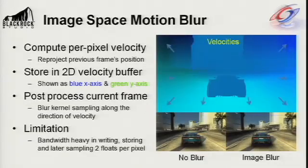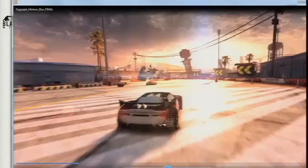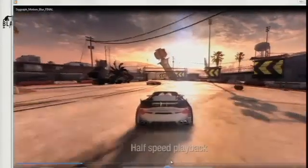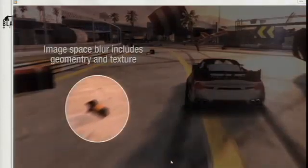Image space motion blur involves computing per-pixel velocity based on reprojecting the previous frame's position, stored in a 2D velocity buffer — shown here with blue and green representing X and Y axes. We then post-process this buffer, sampling the resulting image along the direction of velocities with a blur kernel. This half-speed playback shows the image space post-processing sample, where the blur is applied to both geometry and texture boundaries.